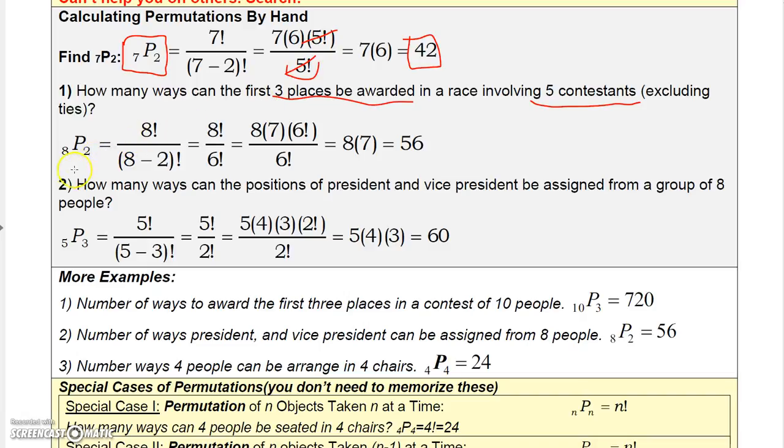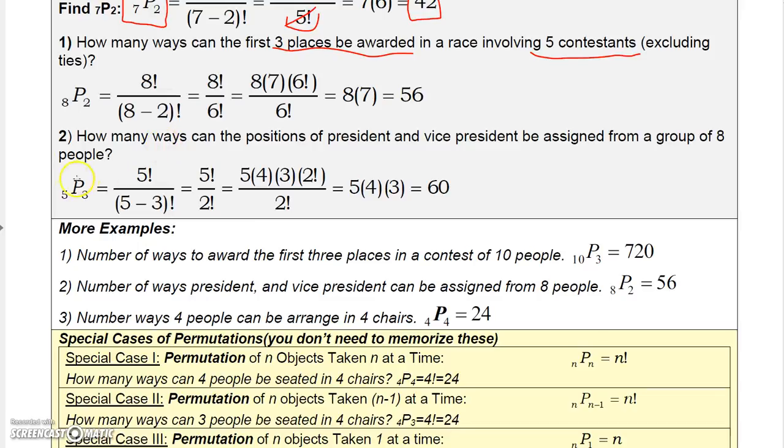Actually, I have this backwards. I need to fix this. This is actually the solution to this one, so my bad. Anyway, this would be out of five. We have five contestants, and we want to know how many ways we can arrange three. That would be five factorial over five minus three factorial, which is five factorial over two factorial. Five times four times three times two factorial over two factorial. You can cancel the two factorial. Five times four times three is 60. Or you can just use your calculator function and type in 5P3 to get 60.